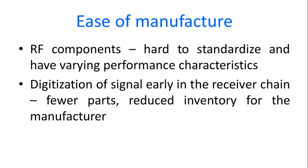The next point is ease of manufacture. The RF components are hard to standardize and they have varying performance characteristics. Since we digitize the signal early in the receiver chain, all the implementation is done at the software level, so we are reducing the hardware required for implementation. The reduced inventory makes it easier for manufacturers to procure a much smaller number of hardware components and implement the system. This gives ease of manufacture.